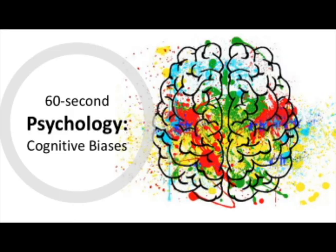Another type of cognitive bias is confirmation bias. This is the theory that we are much more likely to focus on, interpret and recall information that confirms our existing beliefs. For example, if we have a particular political opinion, we are more likely to focus on, interpret and recall information that confirms it, causing bias by ignoring information that conflicts with this opinion.